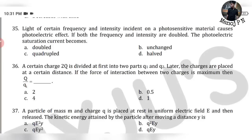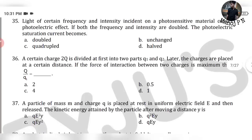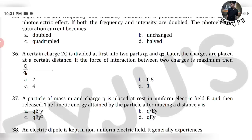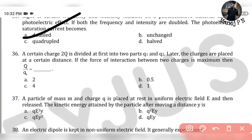35th question: Light of certain frequency and intensity I is incident on a photosensitive material, causing the photoelectric effect. If both the frequency and intensity are doubled, then the photoelectric saturation current becomes doubled. Why? Because photoelectric current is directly proportional to the intensity of light. So if you double the intensity, the current doubles. That is your answer.